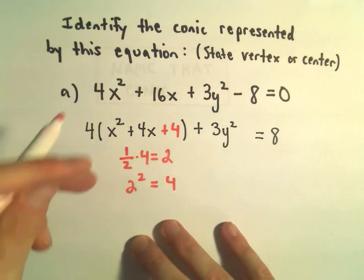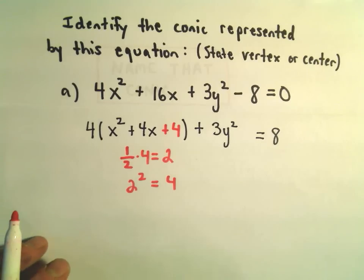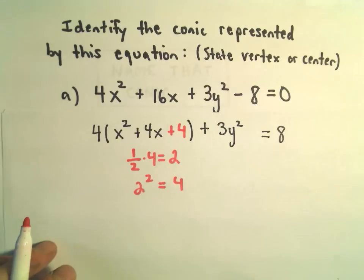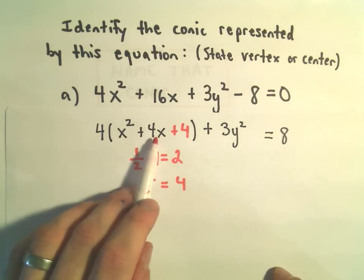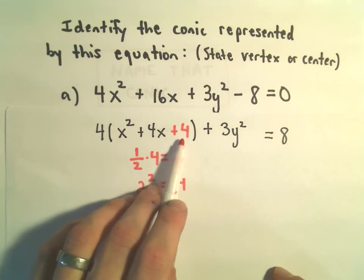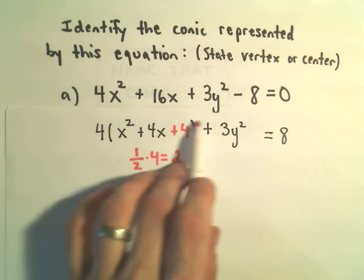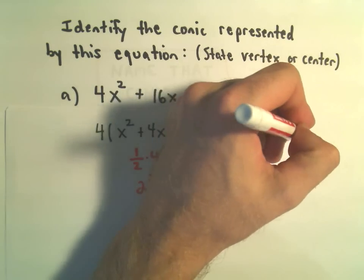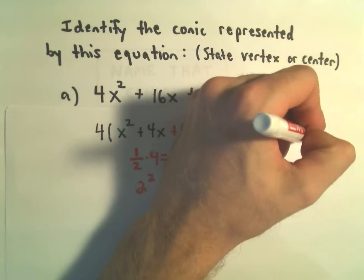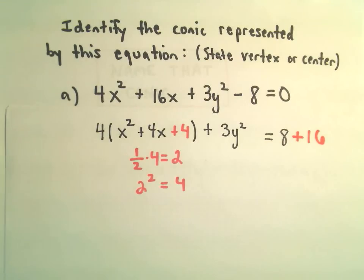So I'm going to stick inside the parentheses a positive 4. But the idea is if we were to get rid of the parentheses, we would have 4x squared plus 16x plus 16. There's no plus 16 on the left side of this equation. Well, since I'm adding 16 to the left side, I'm going to add 16 to the right side as well.